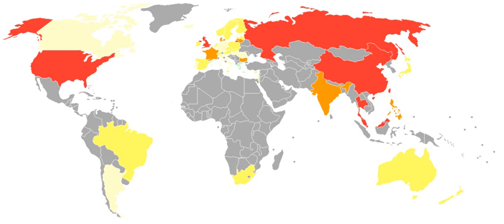These include the Fourth Amendment right to be free of unwarranted search or seizure, the First Amendment right to free assembly, and the Fourteenth Amendment due process right, recognized by the Supreme Court as protecting a general right to privacy within family, marriage, motherhood, procreation, and child rearing. Attempts to improve consumer privacy protections in the U.S. in the wake of the May–July 2017 Equifax data breach, which affected 145.5 million U.S. consumers, failed to pass in Congress.